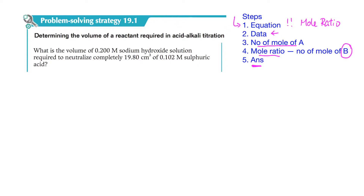Here we have the reaction between NaOH (sodium hydroxide) and sulfuric acid. The very first step is to write the equation. We have NaOH and H₂SO₄. Because sulfuric acid has H₂, I know that NaOH should have a coefficient of 2. You can stop at this point, as it is not really necessary to write the whole equation — it won't count as part of the marks in the calculations.